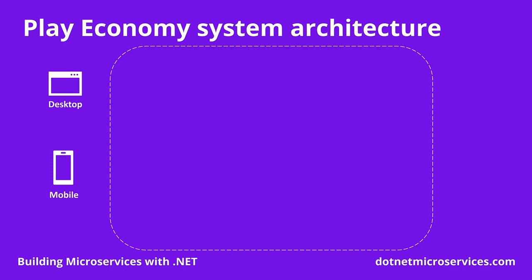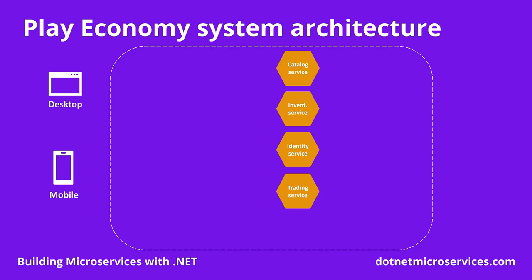Let's now look at the high-level architecture of the system. To support the client applications, a microservices-based architecture has been designed. At the core, we have identified four microservices: Catalog, which owns the list of items available for purchase; Inventory, which keeps track of the quantity of items that a player owns; Identity, which manages the list of players and also acts as an identity provider; and Trading, which owns the purchase process that can grant inventory items in exchange for Gil. Each of these services has its own database with no relationship to other databases, for exclusive use by the owning service.